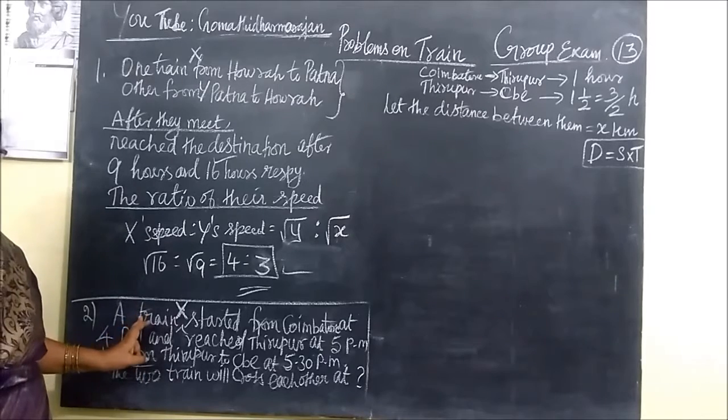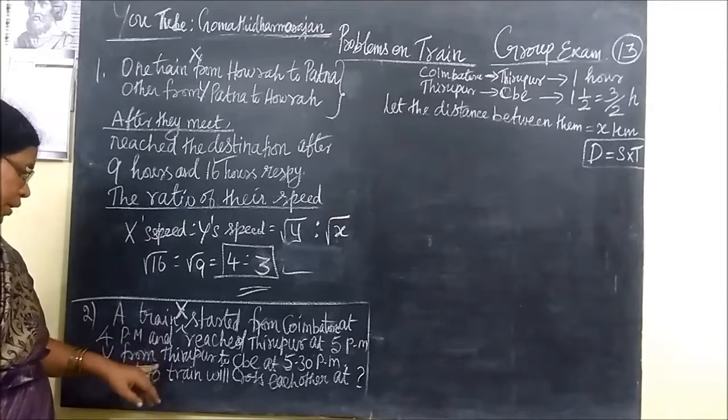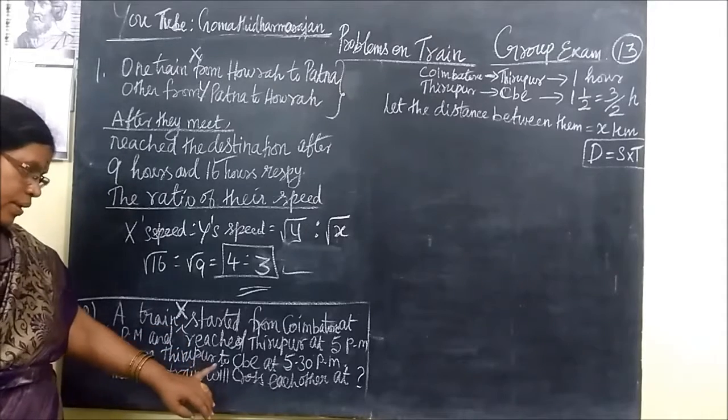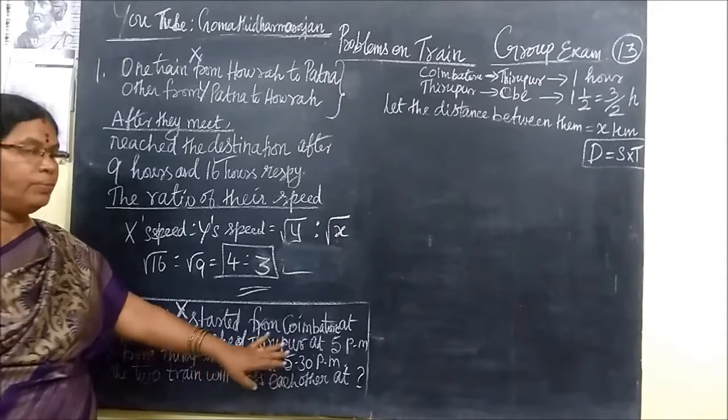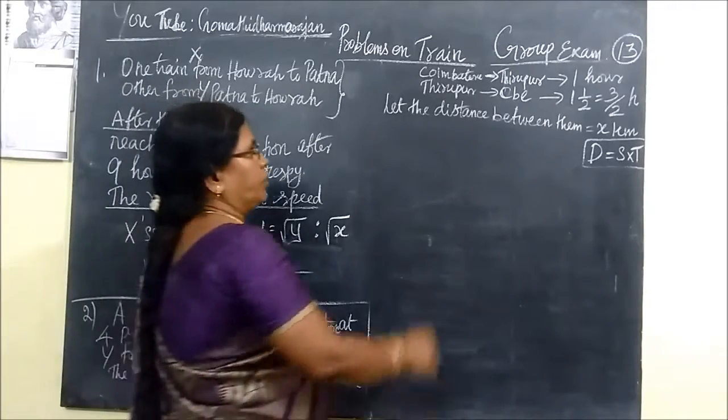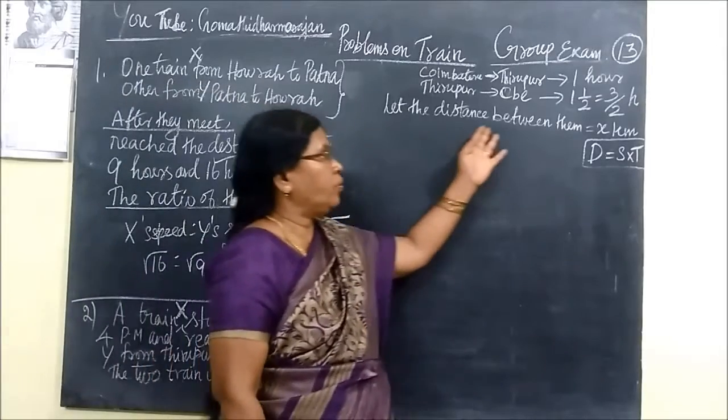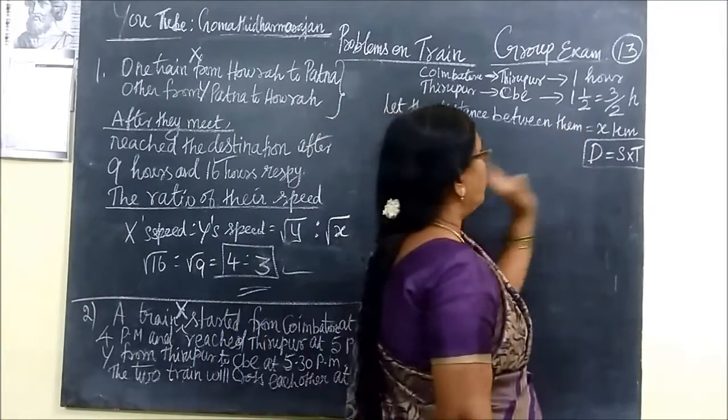Starting time 4 o'clock. X train Y train is 5.30 pm. Starting time 4 o'clock. They cross each other at some particular time. That time only we are going to 5.00 pm. So Goyam tour with Thirupu 1 hour is 10. Thirupu to Goyam tour at 1.5 hours. That is 3 by 2 hours.